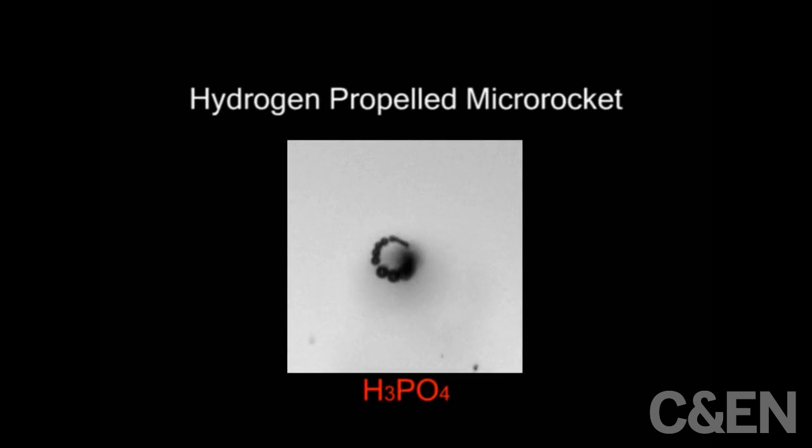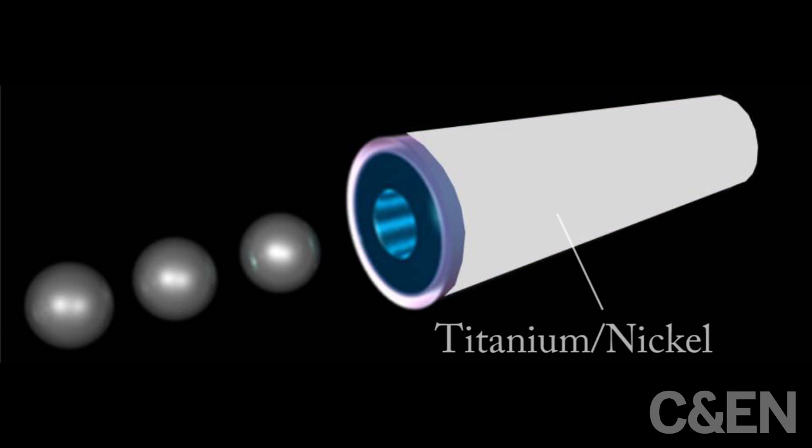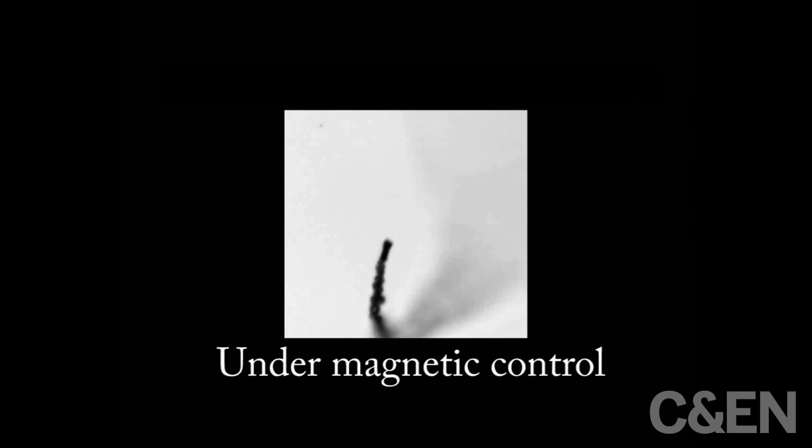The researchers also show that the tiny motors can be manipulated by adding an outer layer of titanium and nickel to the rocket body. A magnetic field, like the one used in an MRI machine, can then direct the motion of the rocket, which is coated in a magnetic metal film.